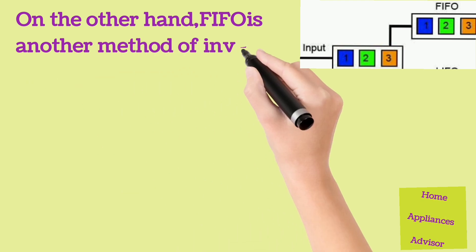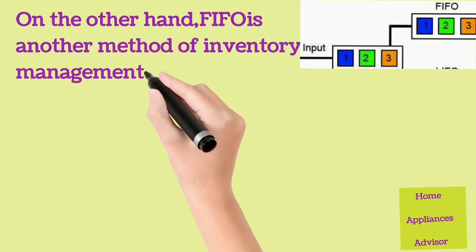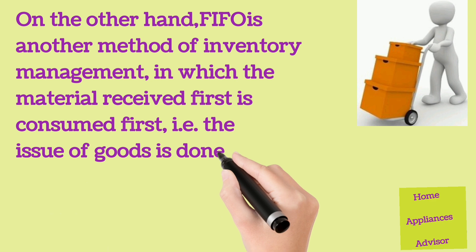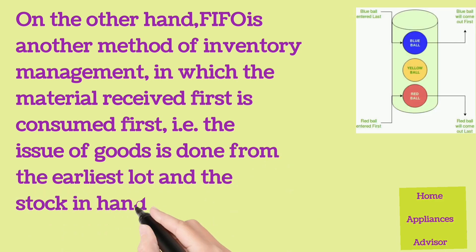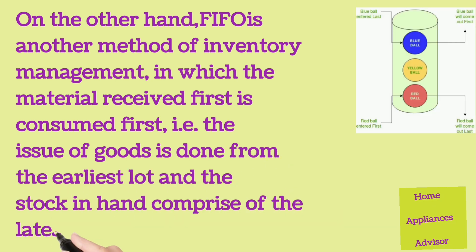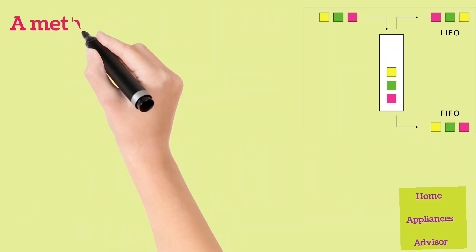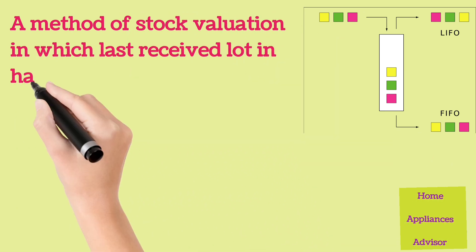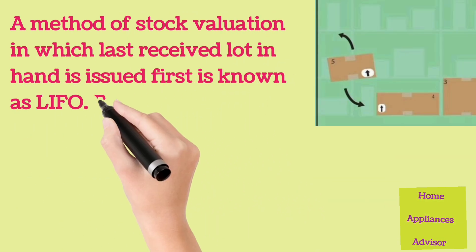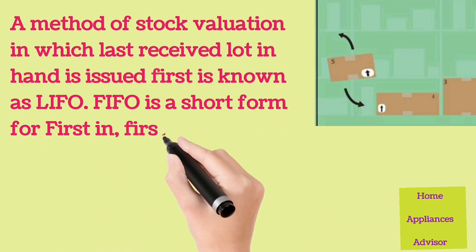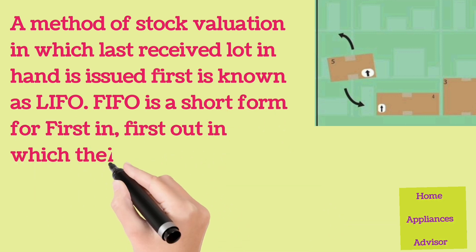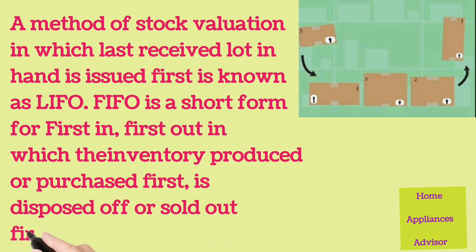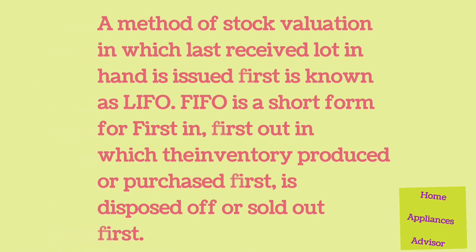On the other hand, FIFO is another method of inventory management in which the material received first is consumed first, i.e., the issue of goods is done from the earliest lot and the stock in hand comprises the latest lot. A method of stock valuation in which the last received lot is issued first is known as LIFO. FIFO is short for first in, first out, in which the inventory produced or purchased first is disposed of or sold out first.